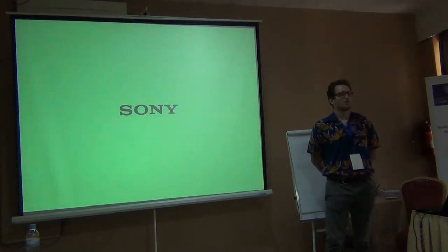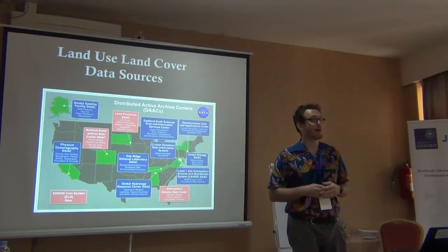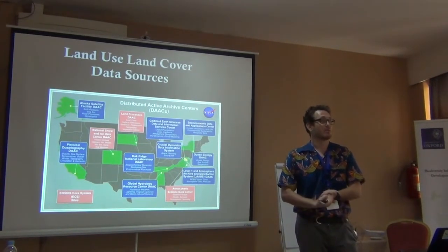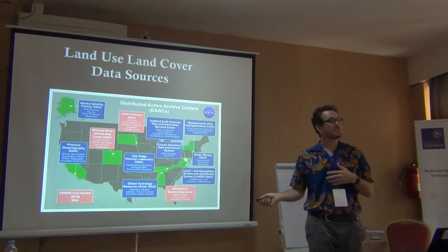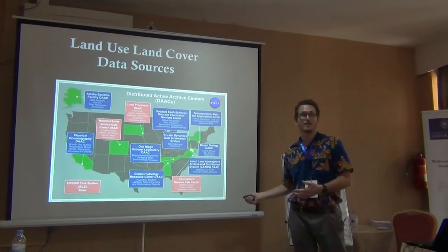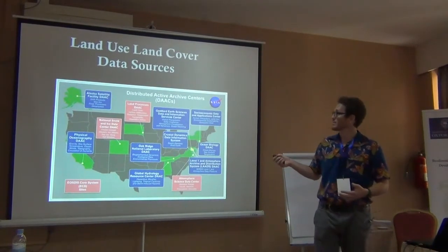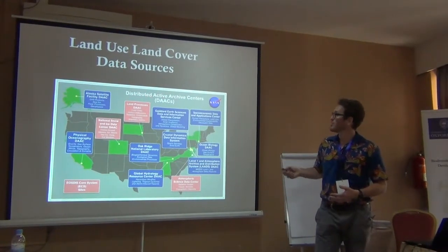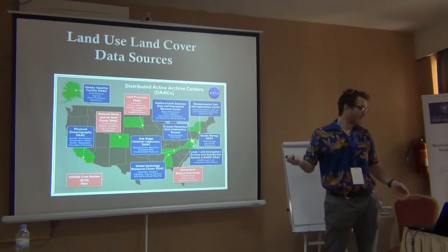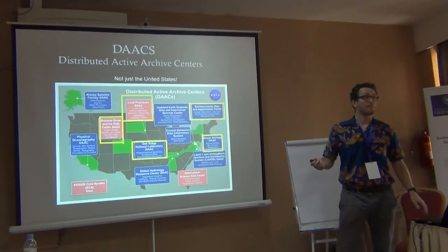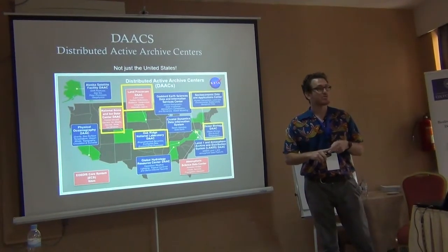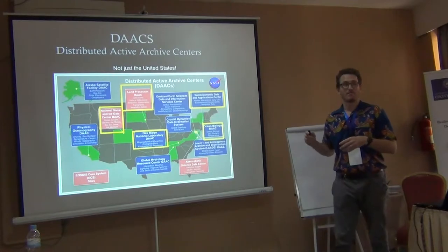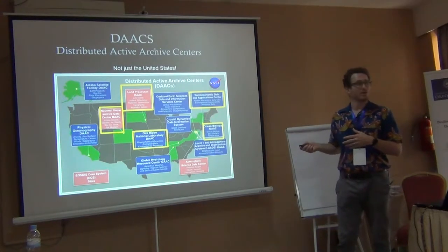What we're going to do now is go over some of the data sources that are available — where can this data be found and downloaded? I'm showing a map of the U.S. because a lot of this data is housed in what are called DACs, Distributed Active Archive Centers. This is data collected by U.S. agencies like NASA and the United States Geological Survey, among many others.